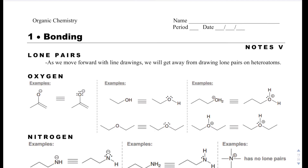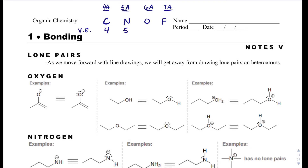A couple of things to make sense of. We have carbon, nitrogen, oxygen, and fluorine. If we find these on the periodic table: carbon is in family 4A, nitrogen is in family 5A, oxygen is in family 6A, and fluorine is in family 7A. Those also represent the valence electrons we have — carbon has 4, nitrogen has 5, oxygen has 6, and fluorine has 7.